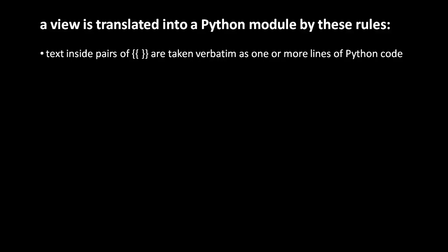A view module is expressed in Web2Py's special template syntax, and by a few simple rules, Web2Py will take that view file and translate it into a module of ordinary Python code. Any text in a view which is inside a pair of double braces is taken as verbatim Python code.